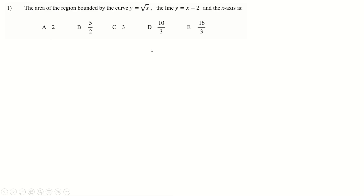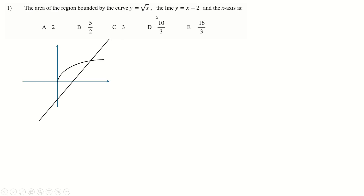We're going to draw lots of pictures in this paper here — this xy-axis is going to turn up so many times. Root x looks like this, and x minus 2 is obviously just a straight line. You could set them equal and solve it, but this is TMUA — you want to be fast. You might notice that x equals 4 makes those two things the same. Actually, x equals 2 makes those two things the same.